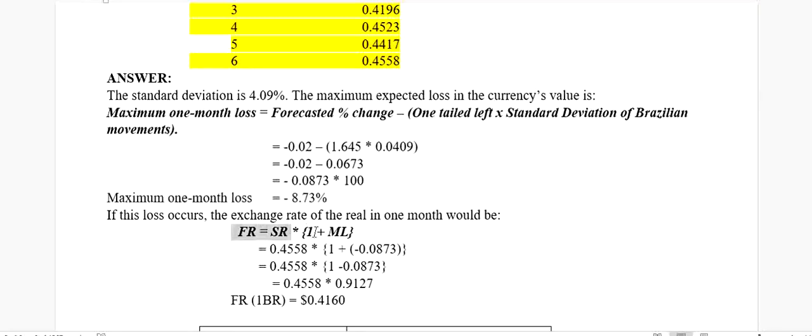So for that you will use the same formula that we have studied in interest rate parity and purchasing power parity discussions. Forward rate will be equal to spot rate multiplied by (1 + the change). So we used to write here EF in interest rate parity and purchasing power parity. I have written here ML. The only reason I've written here ML is representing maximum loss. So how much maximum loss is expected? 8.73%, which is minus 0.0873. This minus represents the loss actually, which is shifted from here. One remains one, and this is the SR which is spot rate.